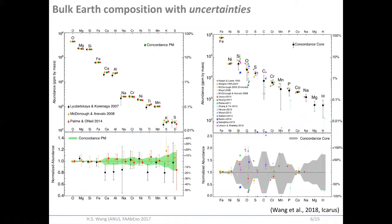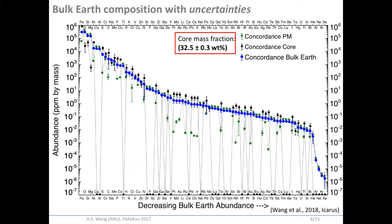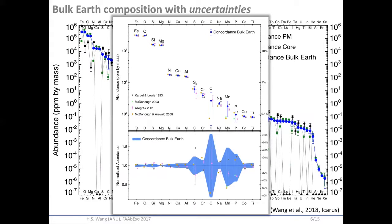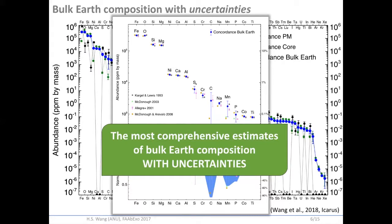This leads to the first part of my PhD work: to determine the bulk Earth composition with uncertainties, by combining and compiling a large set of heterogeneous literature values for primitive mantle composition and core composition, and using our new estimate of the core fraction constrained from seismological and astronomical measurements, to combine the primitive mantle composition and core composition to get the bulk Earth composition with uncertainties. We believe this work can be used to recalibrate our current knowledge of the bulk Earth composition and compare with other planetary bodies.